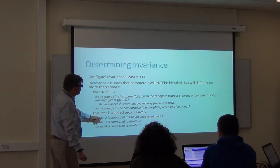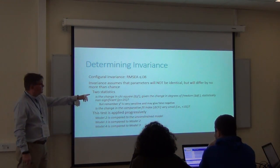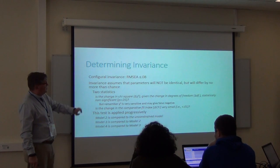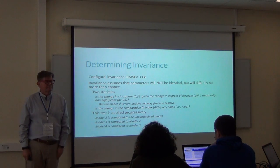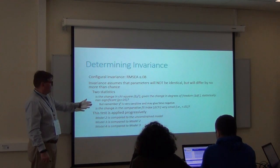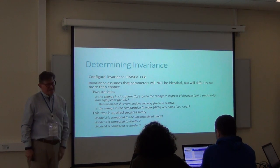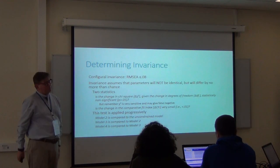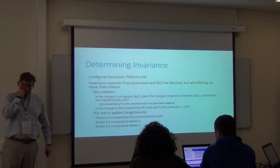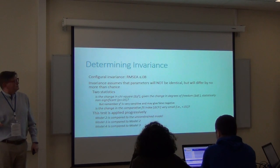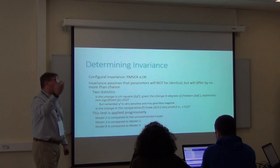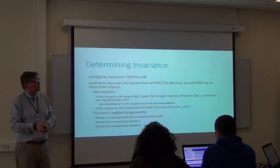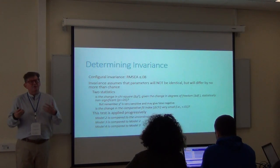There are two statistics: the change in chi-square (delta chi-square) given the change in degrees of freedom (delta df) should be statistically non-significant. But remember, chi-square is very sensitive — it may be a false positive. Some people will report it, and if it's in your favor, report it. But if it's a contradiction, say that because of the over-sensitivity of the chi-square statistic, emphasis will be put on the change in CFI.